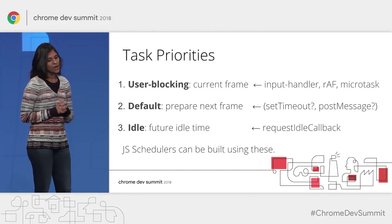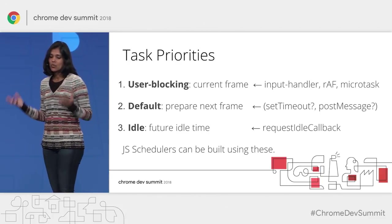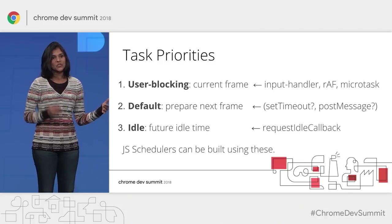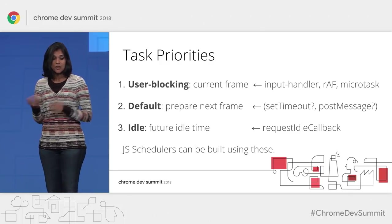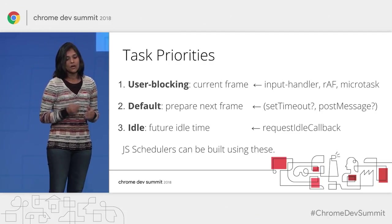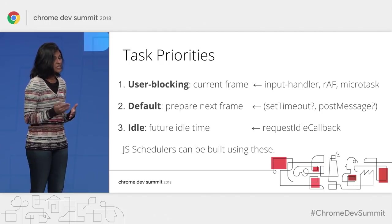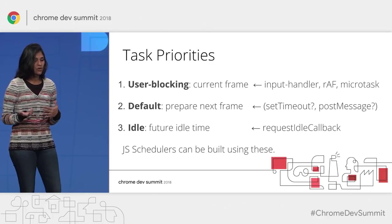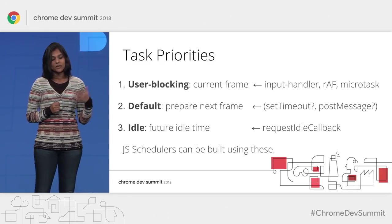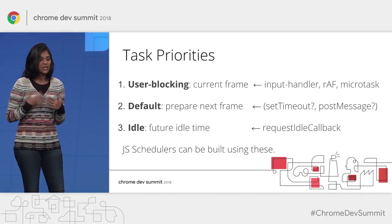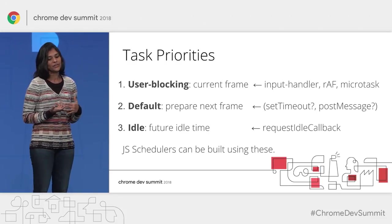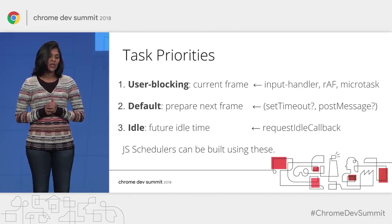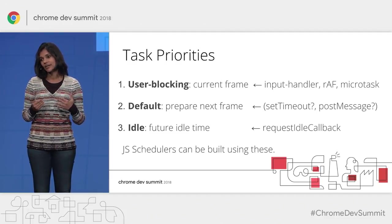For existing primitives: for user-blocking work, input handlers and requestAnimationFrame are great, and microtasks are suited for urgent user-blocking work, though they do not yield to the event loop — we've seen developers accidentally doing large amounts of work in microtasks without realizing it's blocking rendering. For default work, things like setTimeout(0) and postMessage are really hacks and workarounds — there isn't a real primitive here, and we are working to fill this gap. For idle work, requestIdleCallback is a great API. JavaScript schedulers can be built today using these primitives.